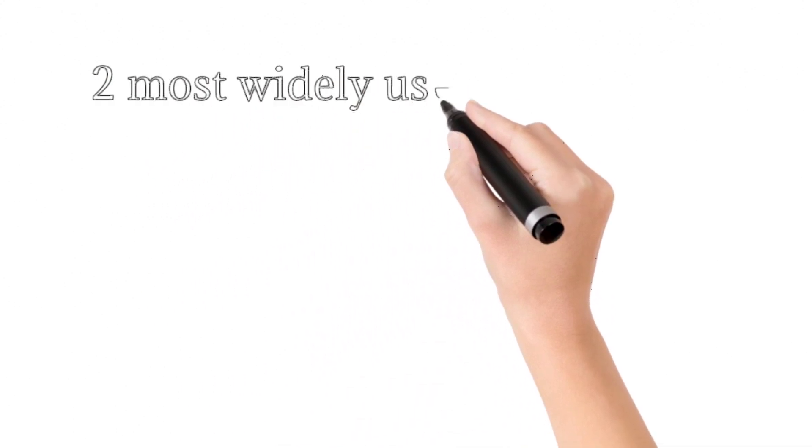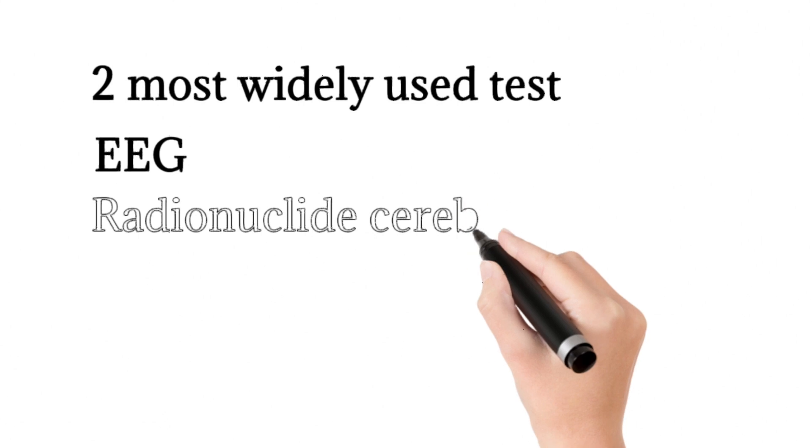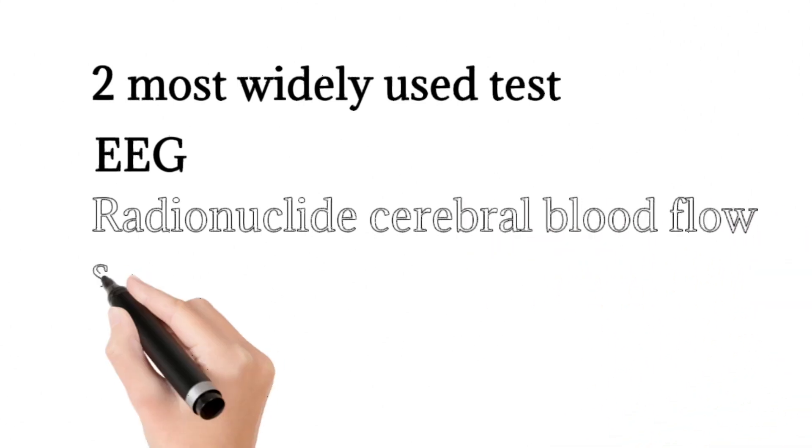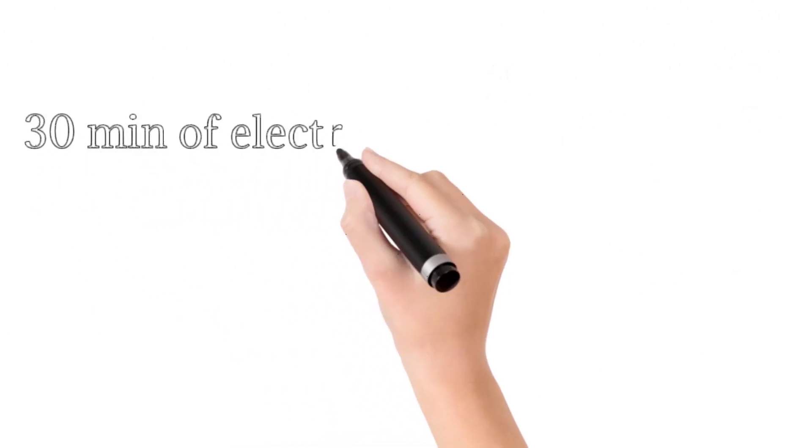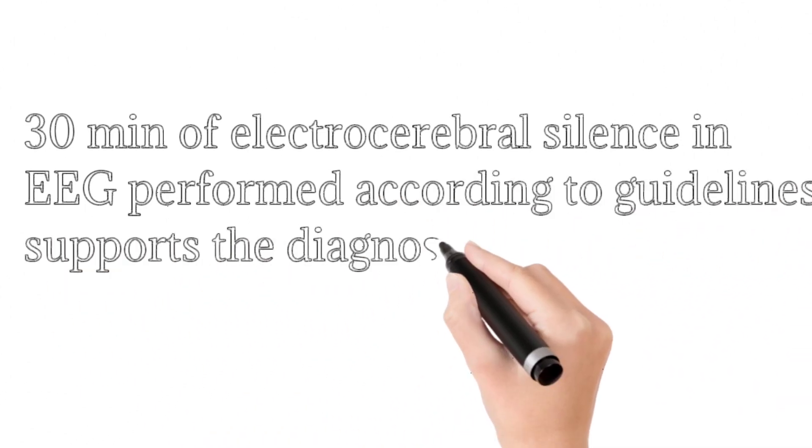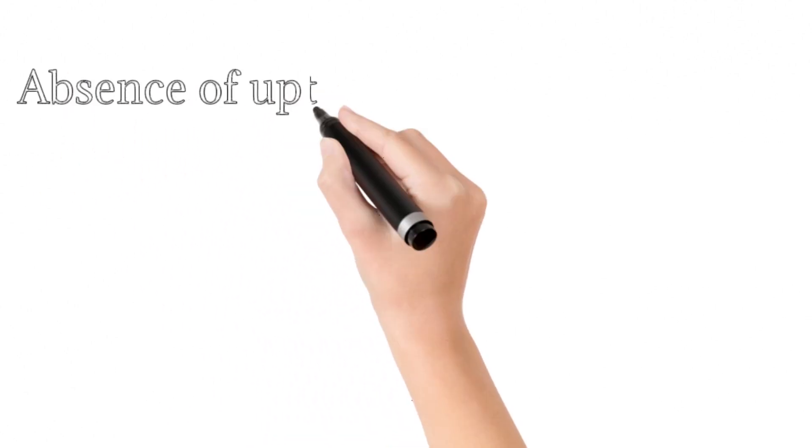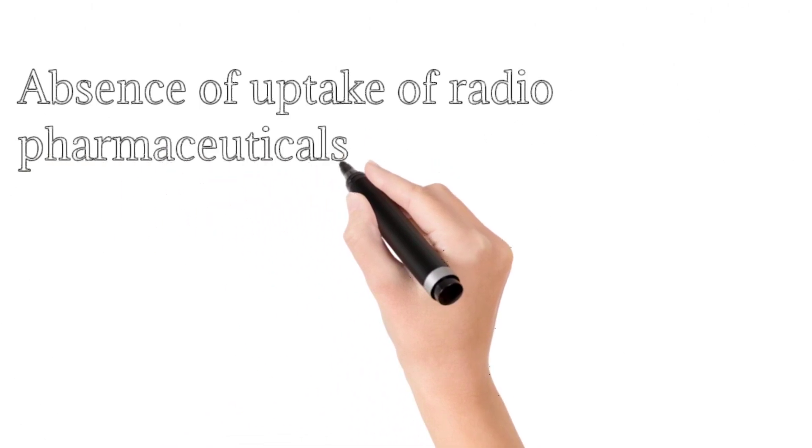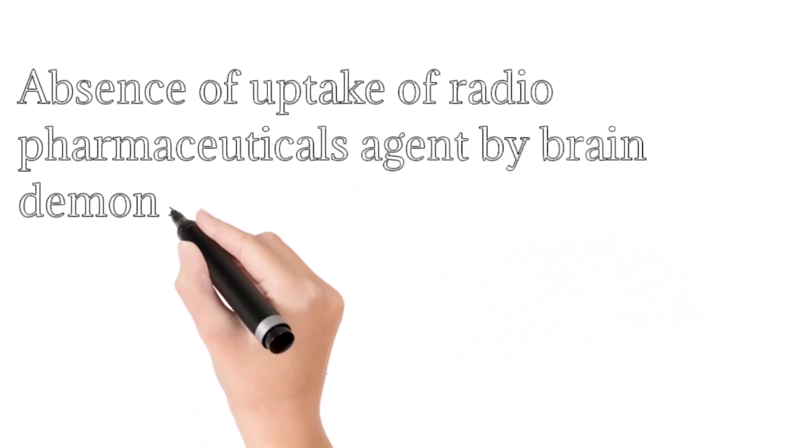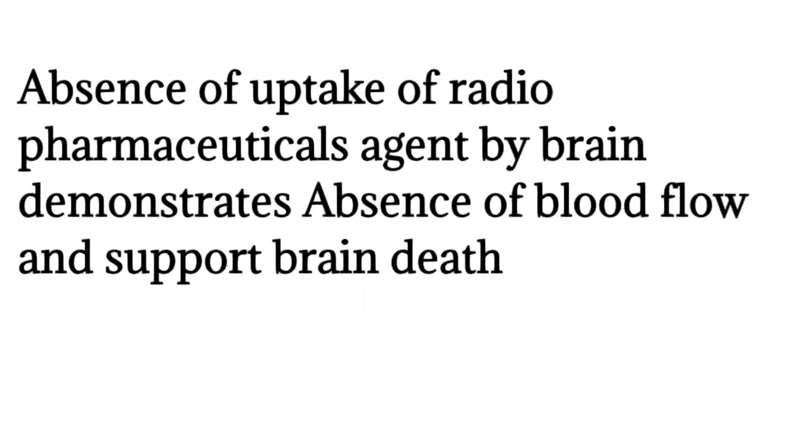Two most commonly or widely used ancillary studies: we have EEG and radionuclide cerebral blood flow study. Thirty minutes of electrocerebral silence in EEG performed according to guidelines supports the diagnosis of brain death. Absence of uptake of radionuclide pharmaceutical agent by brain demonstrates absence of blood flow and it also supports brain death.